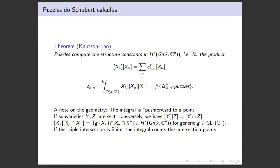We have this theorem by my advisor Alan Knutson and Terry Tao. It says that puzzles do Schubert calculus. Puzzles compute the structure constants for the cohomology of the Grassmannian in the Schubert variety basis. For product expansions of two Schubert varieties, the coefficients you get are these constants, and C_lambda_mu_nu equals the number of lambda mu nu puzzles.